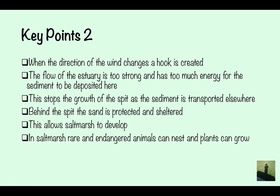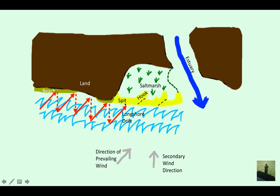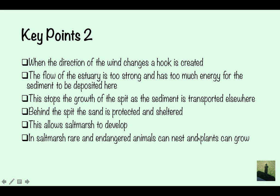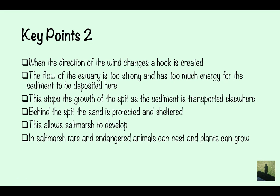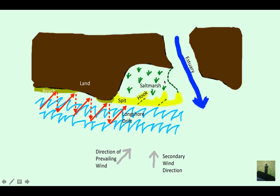Behind the spit, the sand is protected and sheltered. This area isn't going to have any new water coming in as it's kept away — it's sheltered. This allows salt marsh to develop here. I've shown salt marsh on this diagram as bits of grass — always label your diagram. In salt marsh, rare and endangered animals can nest and plants can grow. Often they're protected under wildlife laws.